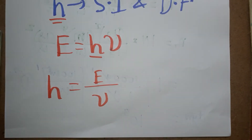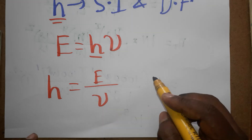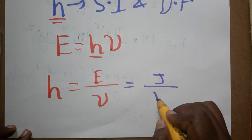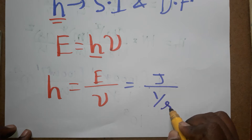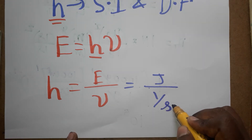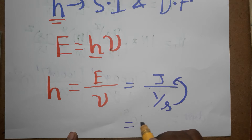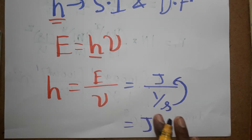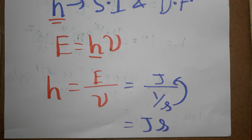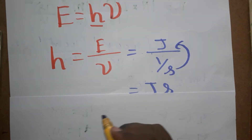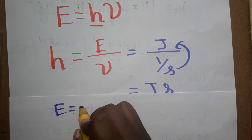The unit of energy is Joule, and the unit of frequency is 1 per second. So Planck constant equals Joule divided by (1/second). The denominator comes into the numerator, giving us Joule·seconds. This is one of the SI units of Planck constant.